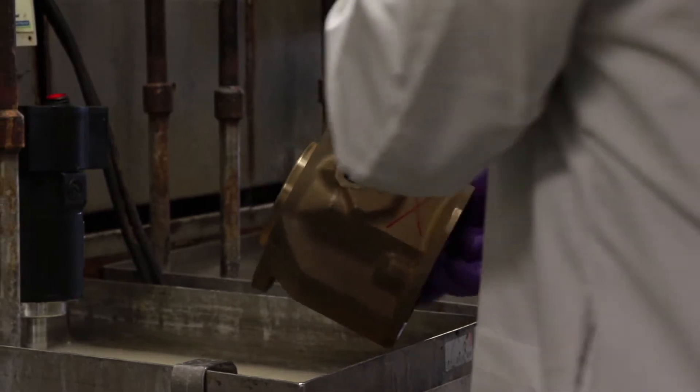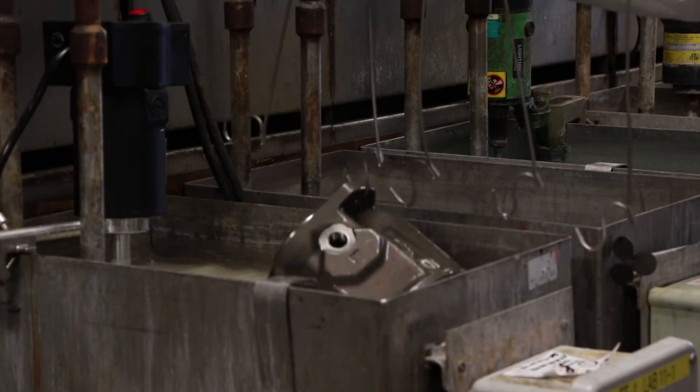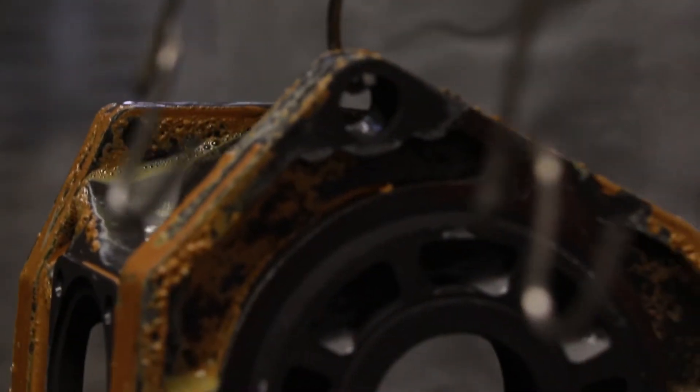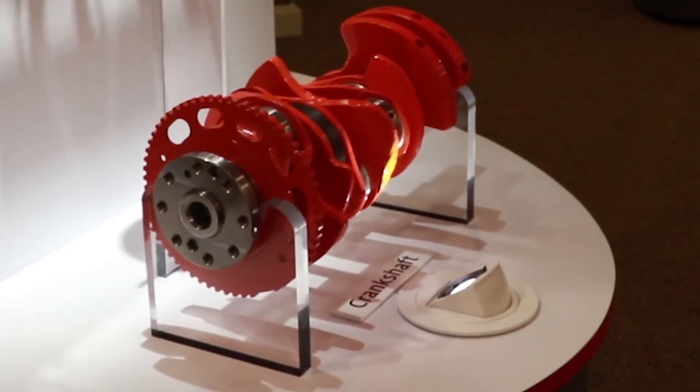Henkel is proud to help remanufacturers become more successful at what they do. We offer cleaners to degrease, de-rust and strip paint, lubricants and coolants to refurbish worn parts, and adhesives and sealants to reassemble core parts to like new condition.